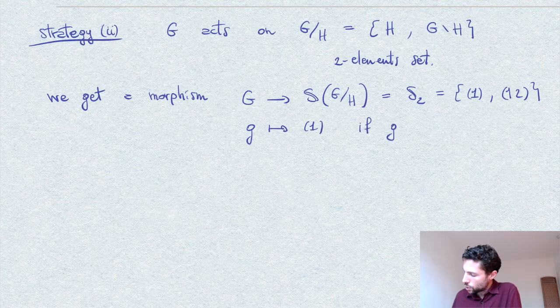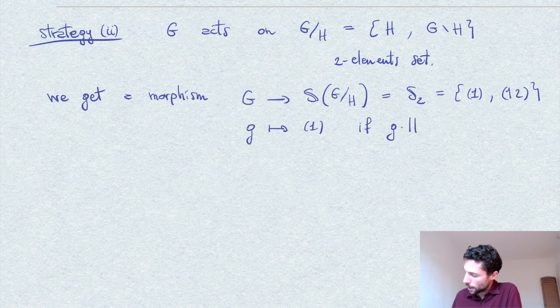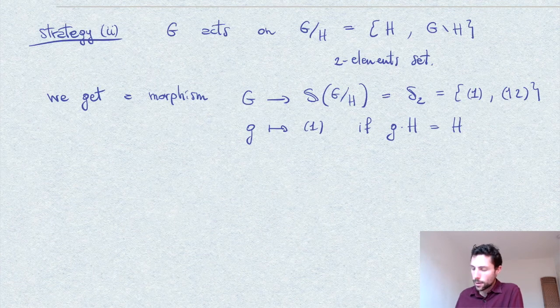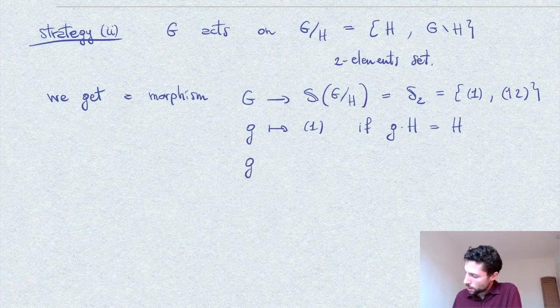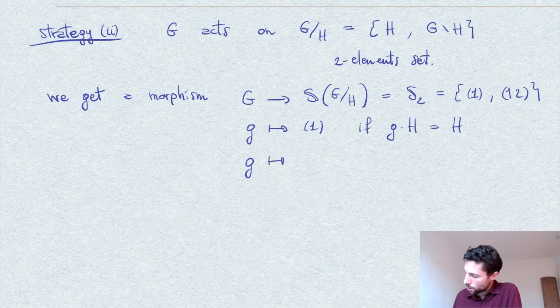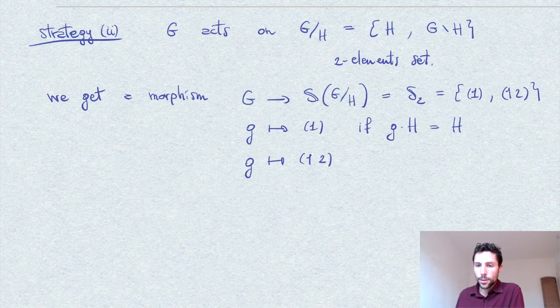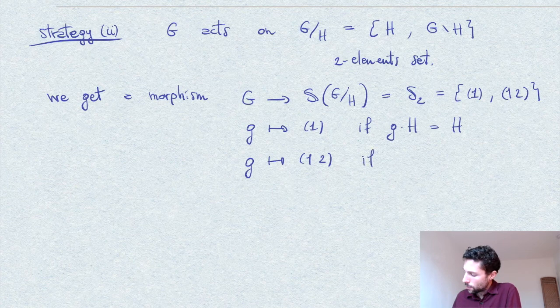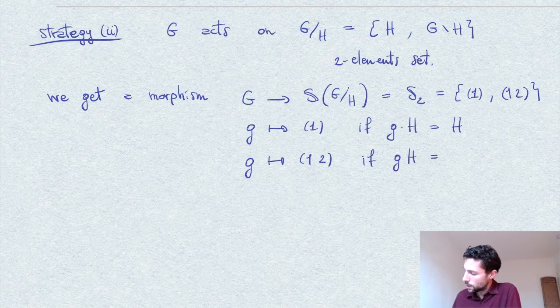Okay, so the action is clear. Either g goes to the identity if g acts on H and leaves it invariant, so it acts as the identity. Or an element of G is sent to the (1 2) cycle if this doesn't happen and g times H is the complement of H.